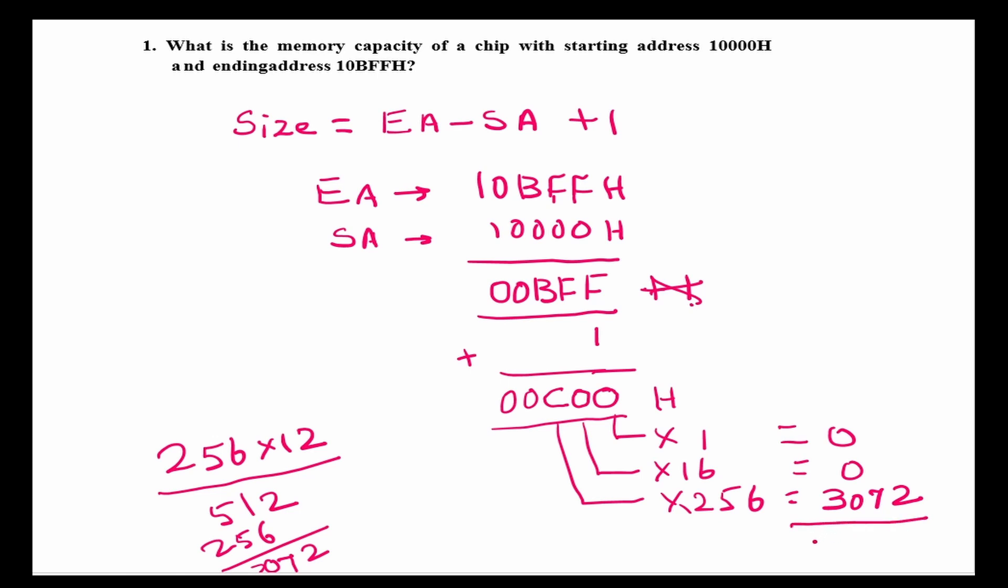So, total is 3072 bytes. If you want to calculate this in kilobytes, kilobytes is equal to 3072. So, this is equal to 3. So, 3 kilobytes. So, the memory size is 3 kilobytes.